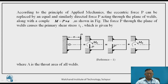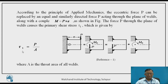Two stresses are induced in the weld section. One is because of force P, which is acting in the plane of the weld section, causing shear failure — so it introduces shear stress. The bending moment introduces bending stress. So this cantilever welded joint is subjected to combined shear stress and bending stress, which are calculated as follows. The primary shear stress tau_1 is calculated as load upon area, P by A, where A is the total area of the weld section.